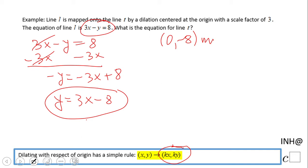That will give us (0, -24). That's it. The slope is the same, 3. So the equation of the dilated line will be y = 3x - 24.